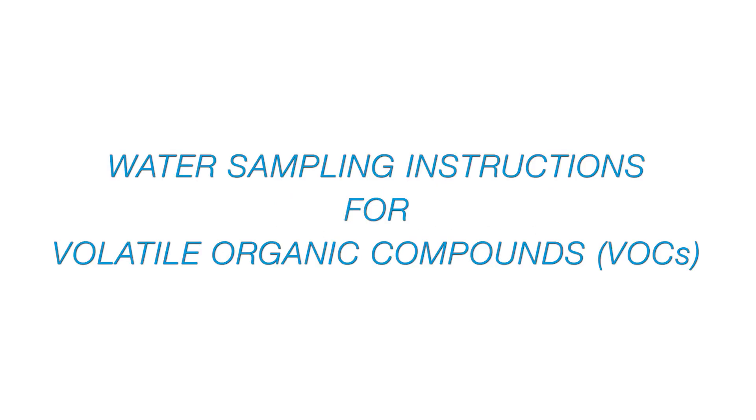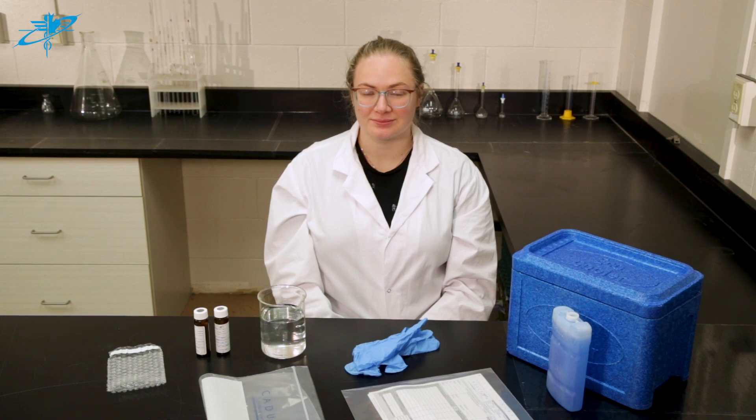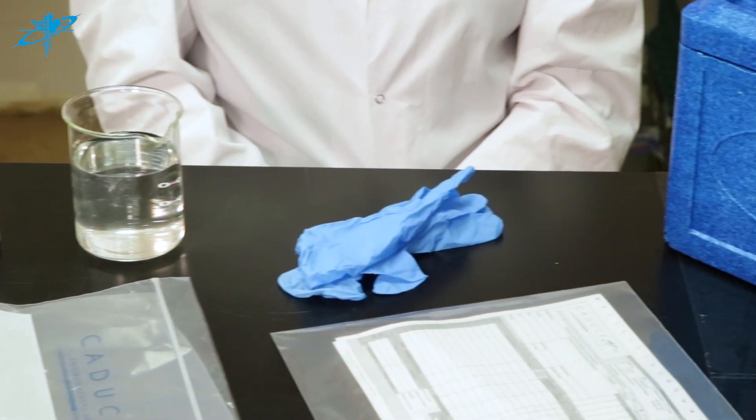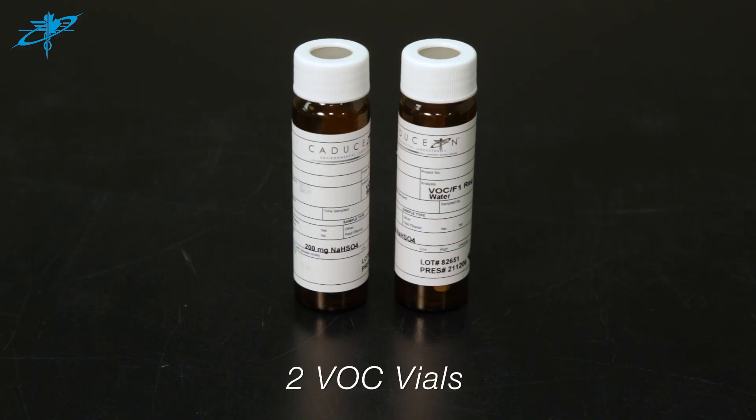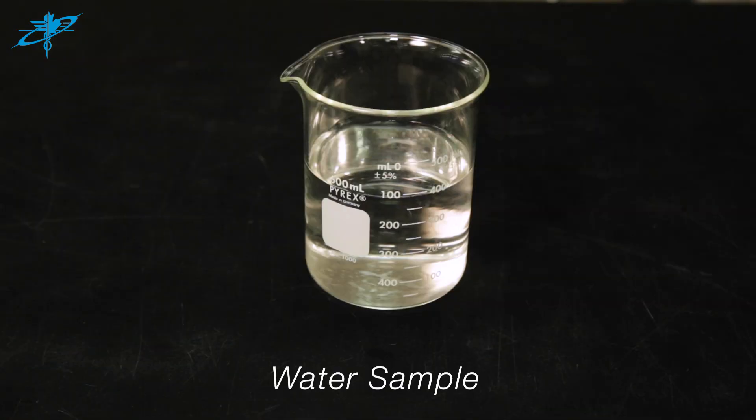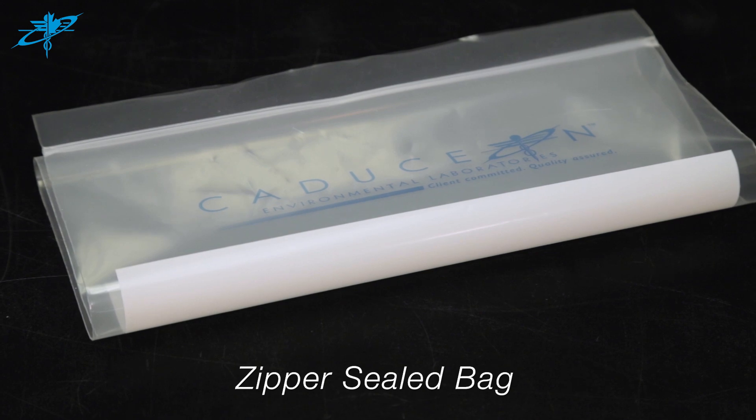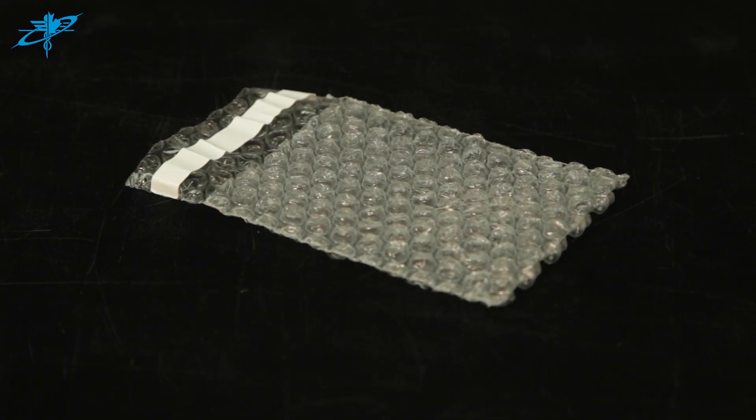This video contains water sampling instructions for volatile organic compounds. Prepare your samples in a clean, dry area free of contaminants. Here are the items you will need: two VOC vials, water sample, zipper-sealed bag, bubble wrap bag, hard shell cooler, ice packs, and a chain of custody submission form.